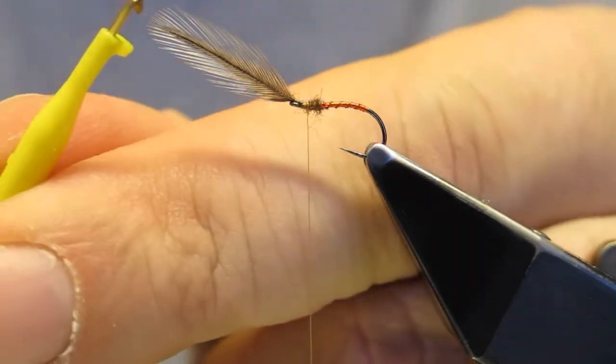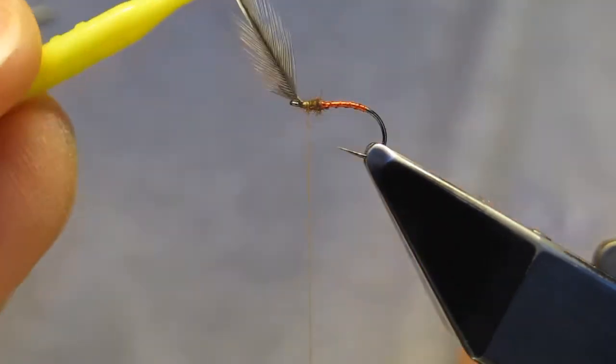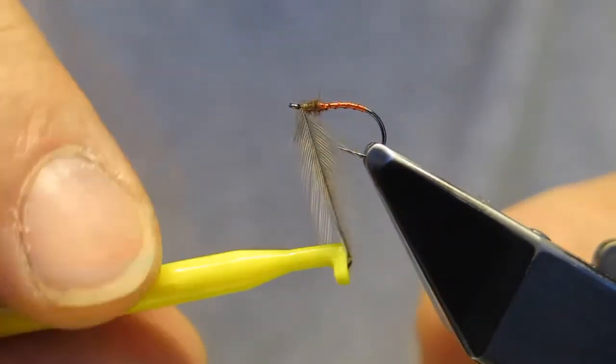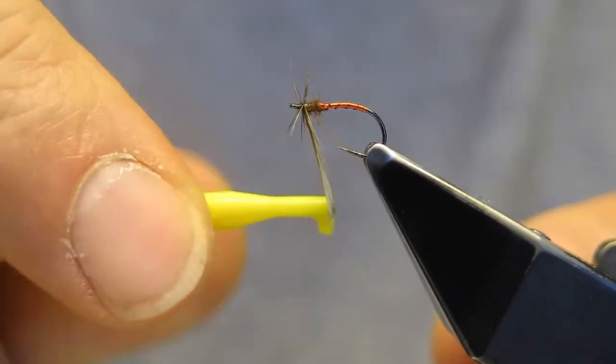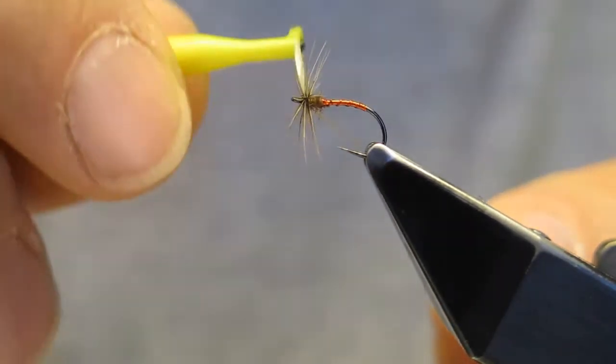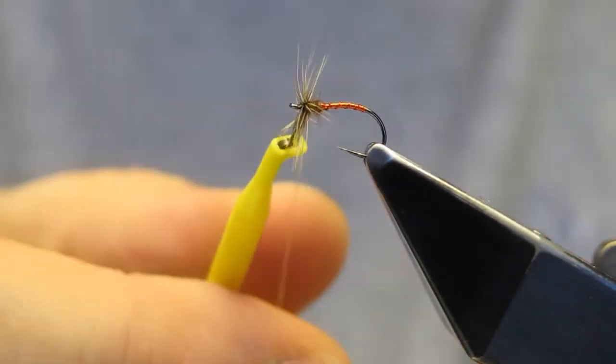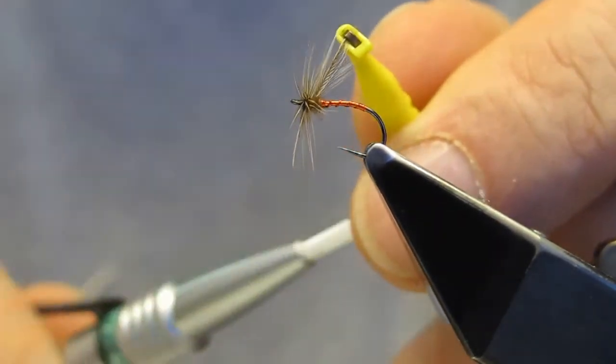Then clip on the easy pliers again and wrap three turns for the collar.